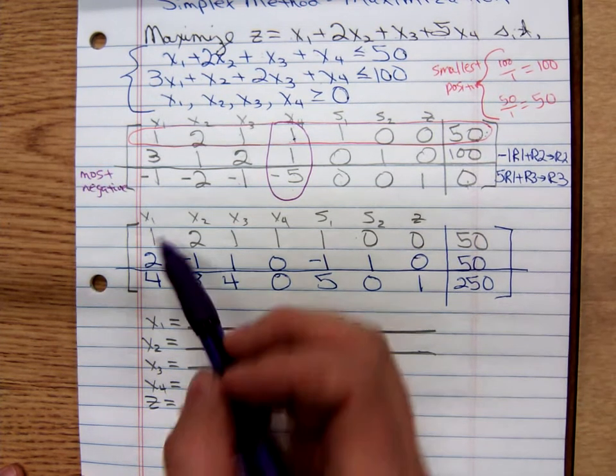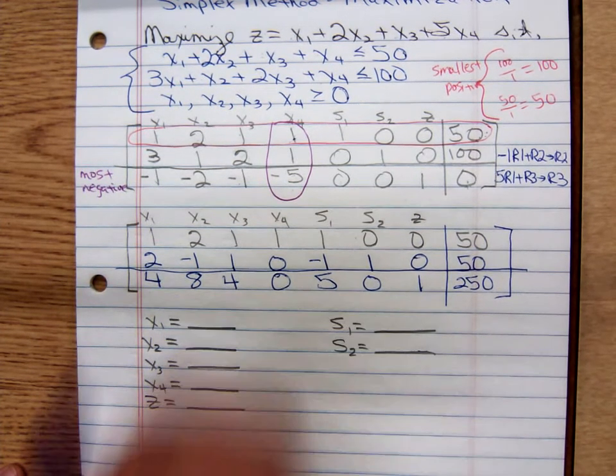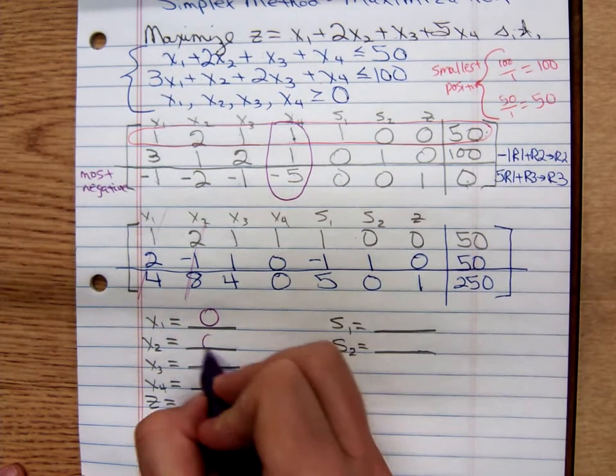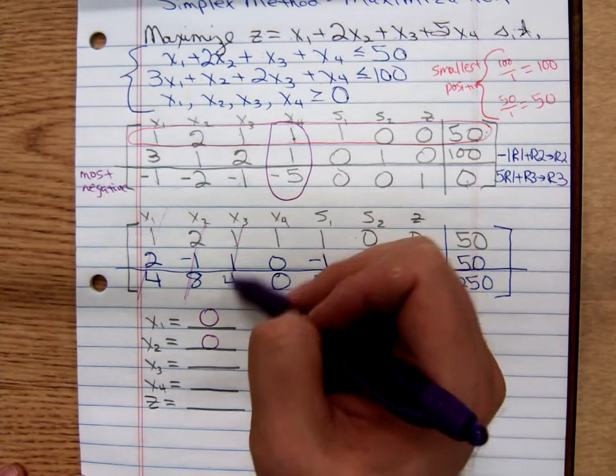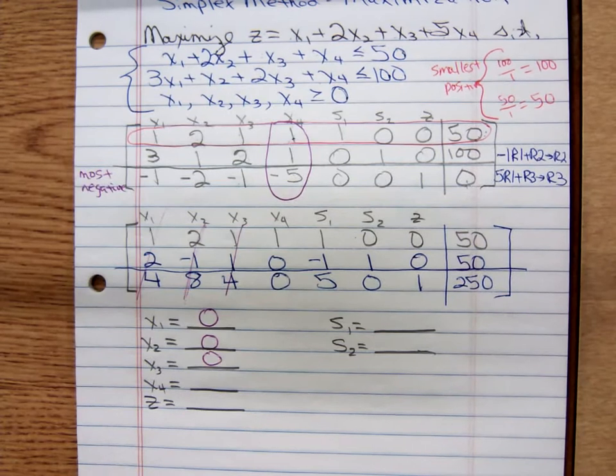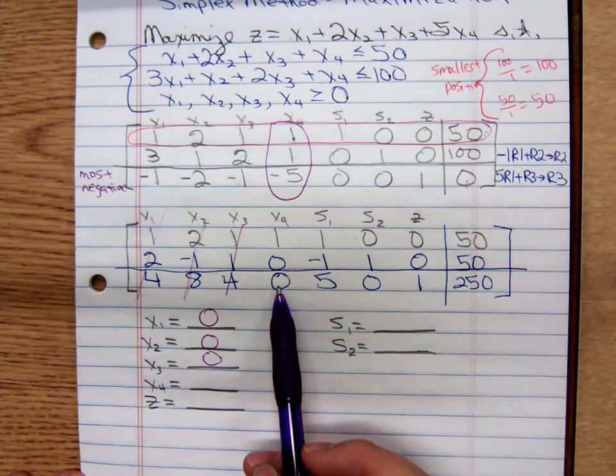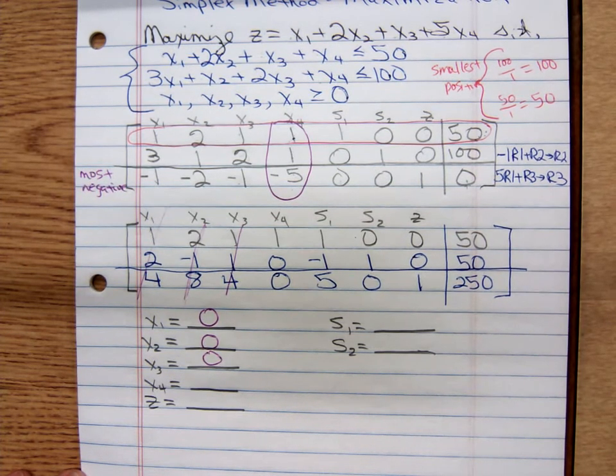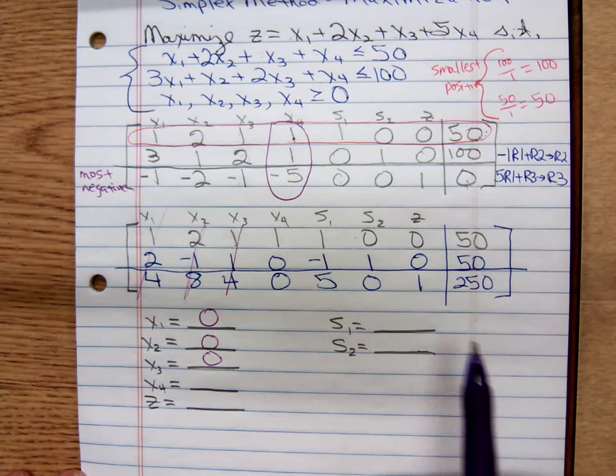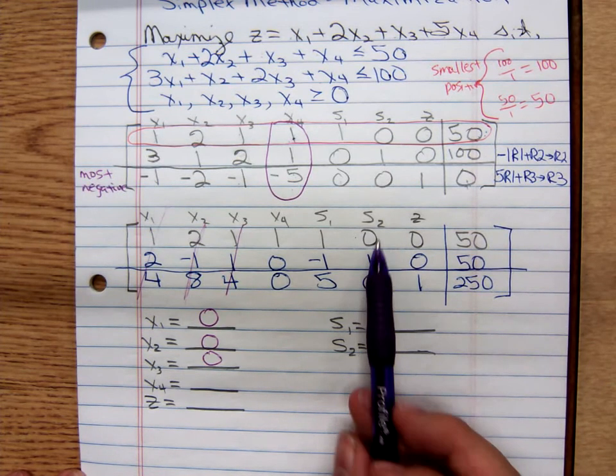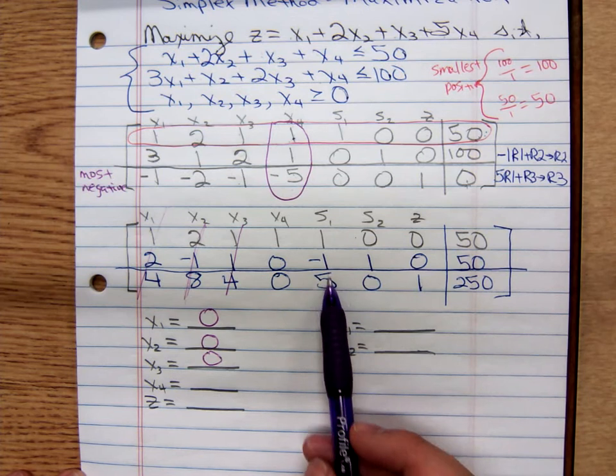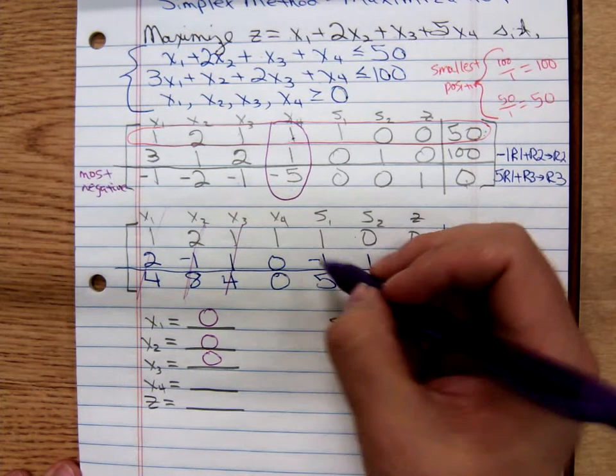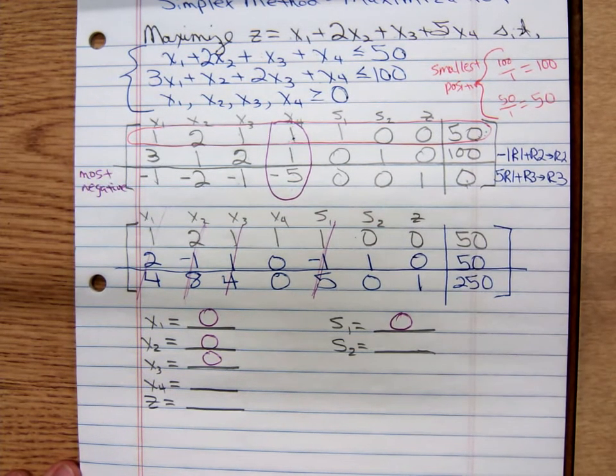That has all those other numbers, so x1 is going to be set to 0. All those numbers there, x2 is going to be set to 0. All those numbers, x3 is going to be set to 0. What else is going to be set to 0? x4 isn't. x4 has the 1 and all the rest 0. Is s2 going to be set to 0? No, because it has a 1, all the rest 0. s1 is the one that gets set to 0. So now I'm able to read out the remaining values once I cross out all the ones are set to 0.